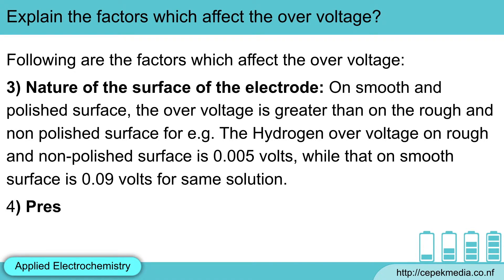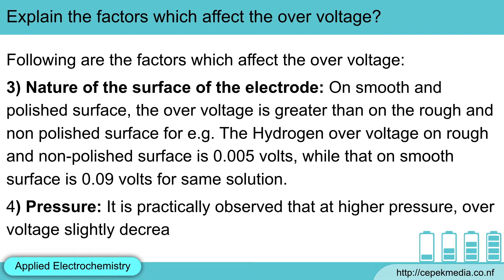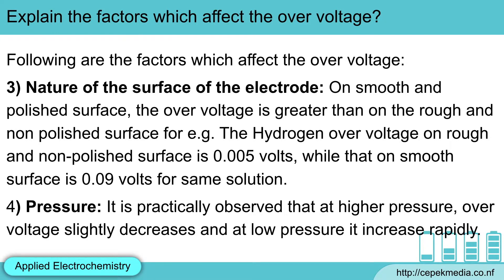Fourth, pressure. It is practically observed that at higher pressure, overvoltage slightly decreases, and at lower pressure, it increases rapidly.